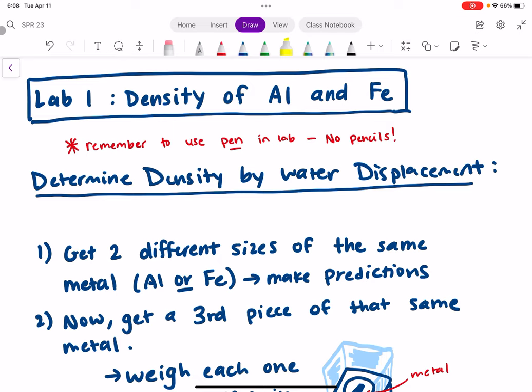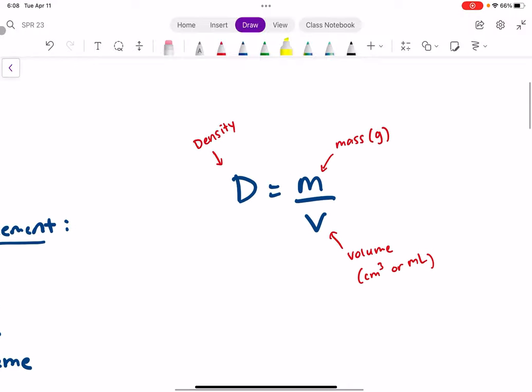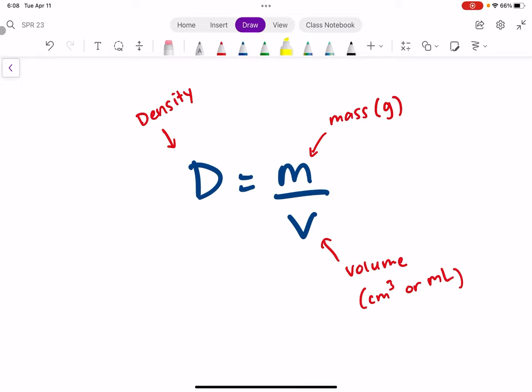We're going to determine the density of different types of metals using different methods. Let's take a quick detour to recap. If you haven't watched the 2.7 density video, you might want to do that before lab. It's probably going to help you out quite a bit. Density is a relationship between the mass of a substance and the volume of that substance we have.